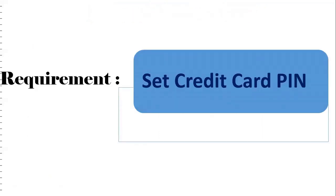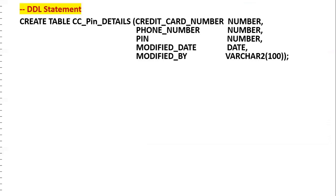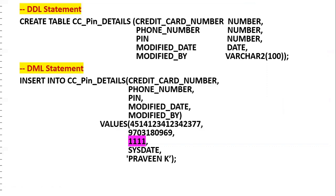Our requirement is to update the credit card PIN. To achieve this, a table must be created: CC_PIN_DETAILS (credit card PIN details). The columns are: credit_card_number, pin, modified_date, and modified_by — to trace who modified it and when. I'm inserting one dummy record using my dummy credit card number, phone number, and an initial PIN. The name will be Praveen Kumar. We then commit the transaction using TCL so data is stored permanently.